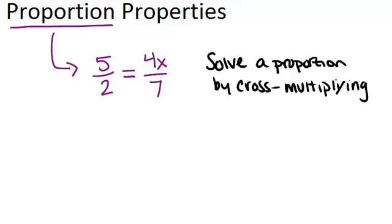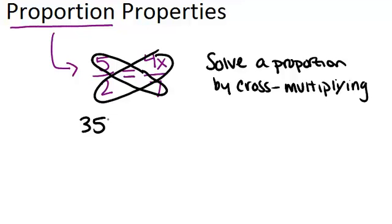So let's cross multiply in order to solve this proportion. Sometimes it helps to draw in some circles to remind you what you're multiplying. And the two things that I've circled at a time are what you're going to multiply. So we're going to do 5 times 7, which is 35, and then 2 times 4x, which is 8x.